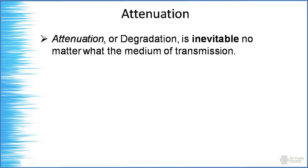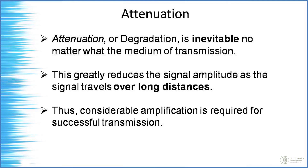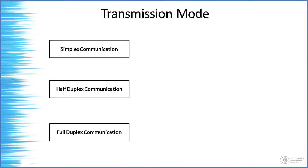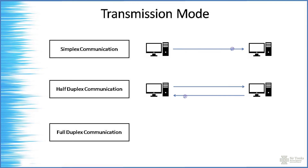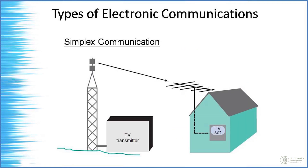Attenuation is a degradation that is inevitable regardless of the transmission medium. It greatly reduces signal amplitude as the signal travels over long distances, so considerable amplification is required for successful transmission. In communication, there are three modes: simplex, half duplex, and full duplex. Simplex is one-way only, like TV broadcast — the transmitter at ABS-CBN or GMA transmits during regular hours and it is received by your antenna.